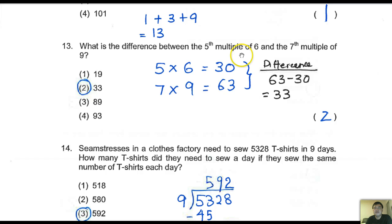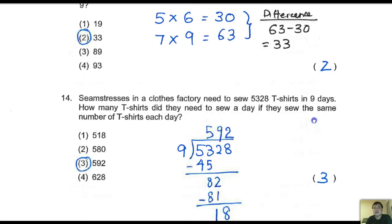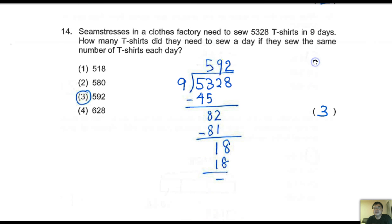Let's carry on, number 13. What is the difference between the fifth multiple of 6 and seventh multiple of 9? Now, fifth multiple of 6 is 5 times 6. Seventh multiple of 9 is 7 times 9. So the difference means 63 takes away 30, which is 33. The answer is 2.